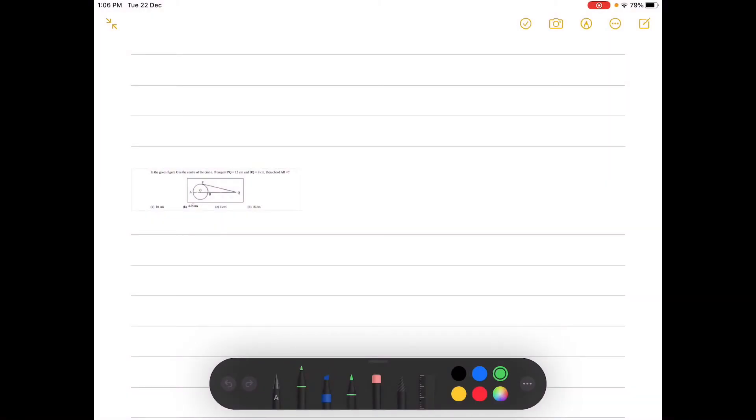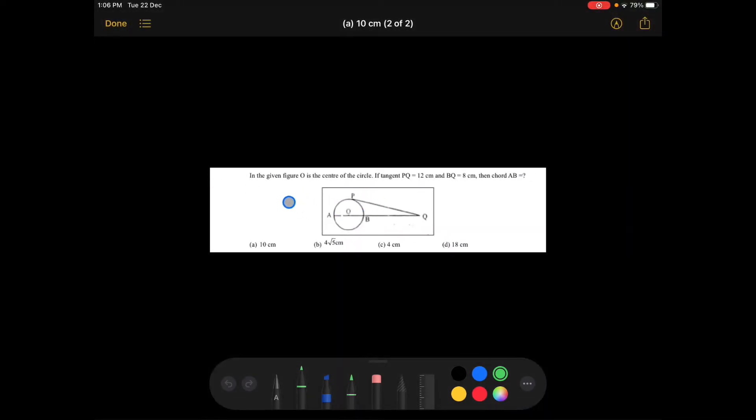Hello guys, welcome back to another lecture of solving problems. In this lecture we will be solving this question. This question is based on the circles chapter. Let's see what the question says: In the given figure O is the center of the circle. If tangent PQ is equal to 12 centimeters and BQ is equal to 8 centimeters, then the chord AB is equal to question mark.